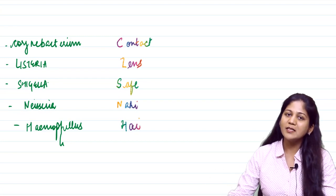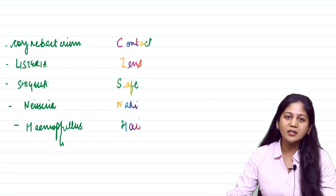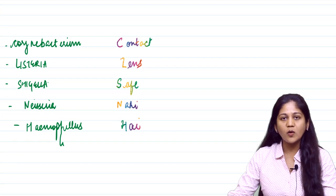These are the five organisms which can penetrate inside the cornea with an intact epithelium to cause a corneal ulcer.